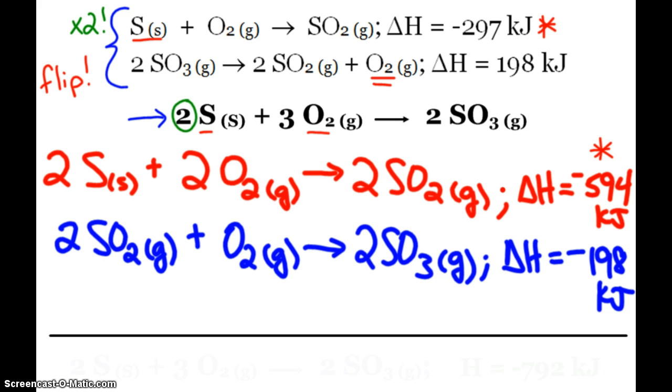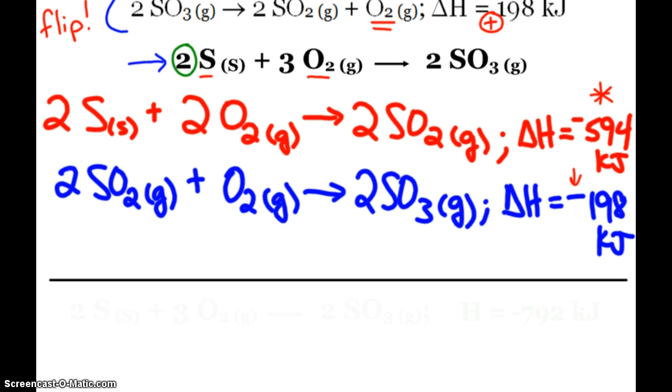don't forget that also means I multiply the delta H by two. So that's how I got negative 594 kilojoules. Second reaction, when I flip it, I also flip the sign. It was positive here, now it's negative down here.